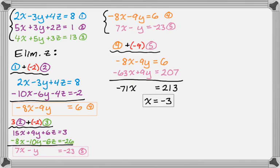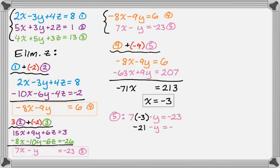Now I go back to equation 5 and substitute in x equals negative 3. So it's 7 times negative 3 minus y equals negative 23, which gives negative 21 minus y equals negative 23. So negative y equals negative 2, meaning y equals 2. Now I know x is negative 3 and y is 2.